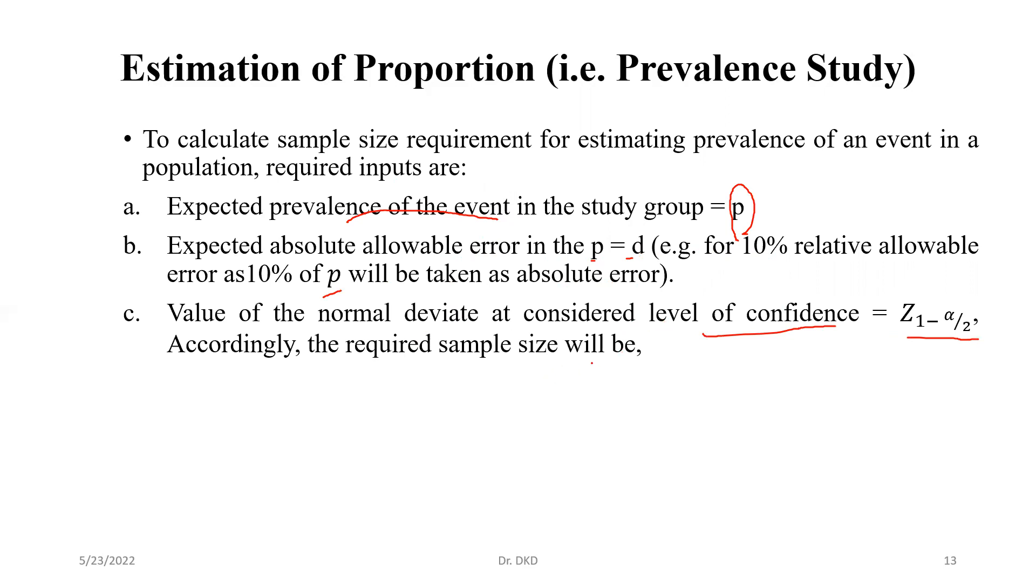Then the required sample size, we can apply the formula: Z1 minus alpha by 2 squared into P into 1 minus P, that is P into Q, divided by D squared. So we can calculate the minimum required sample size for prevalence study.